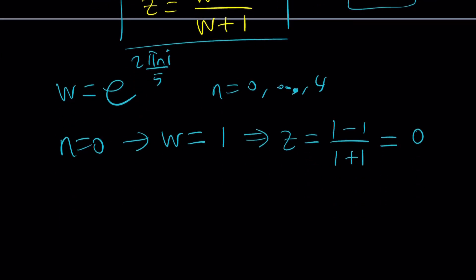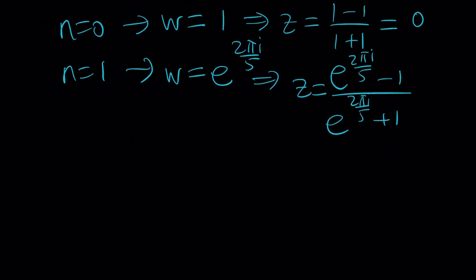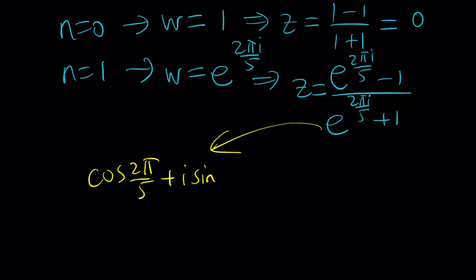If n equals 1 then w equals e to the power 2πi over 5. Think of 2π over 5 as an argument — that's 72 degrees. So z equals (e to the power 2πi over 5) minus 1, divided by (e to the power 2πi over 5) plus 1. For the denominator we can write it as cosine(2π/5) plus i·sine(2π/5) and add 1, then use double angle formulas to simplify.